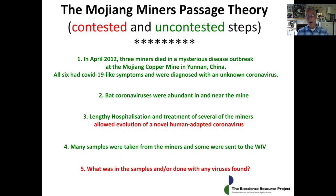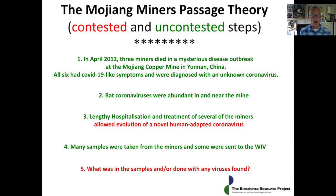The theory we have proposed originated with a discovery barely mentioned in the scientific literature: a disease outbreak in 2012. In this outbreak, three miners died and three became sick at the Mojiang copper mine in Yunnan, China. All six miners had COVID-19-like symptoms and were diagnosed tentatively with an unknown coronavirus. We also know from subsequent sampling that bat coronaviruses were abundant in and near the mine — very diverse and very numerous — and that the miners were shoveling bat guano, providing a connection with the bats.